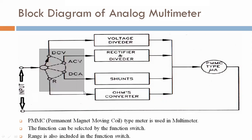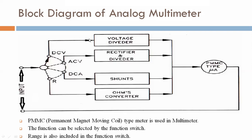Looking at the block diagram, DCV means DC voltage, which represents one of the measurement functions available on the multimeter.